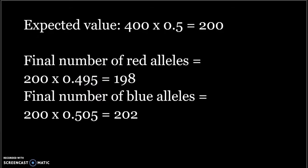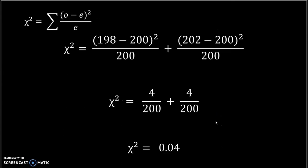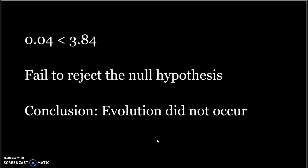Because we're testing the null hypothesis, which means that there isn't any change over time, our expected values will be 200. For the red allele, our observed value is 198, and for blue, it is 202. Then we plug these values into the chi-squared equation and get a value of 0.04. This is less than the critical value of 3.84, so we fail to reject the hypothesis.